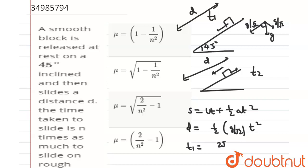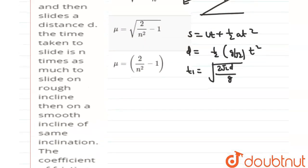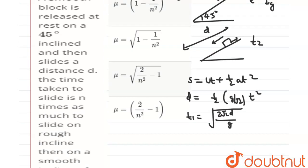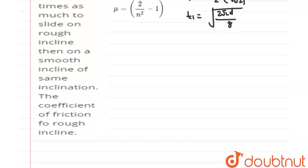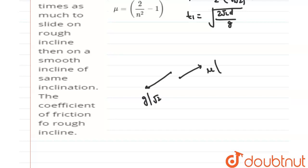Second case — with friction. Net acceleration = g/√2, but frictional force = μ × normal force = μ·mg·cos45°, giving a negative acceleration due to friction of μg/√2. So net acceleration = g/√2 − μg/√2.